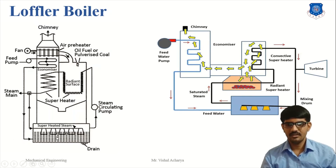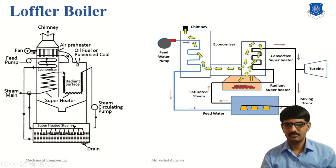In the evaporating drum, 2/3rd superheated steam passes through the nozzle and mixes with the feed water, converting it into saturated steam. The steam circulating pump then transfers the saturated steam to the radiant superheater. In the radiant superheater, heat transfers from the combustion of fuel by radiation and converts the steam into superheated steam. The convective superheater then converts the steam into superheated steam at 500 degrees Celsius and transfers it to the turbine, while 2/3rd steam is returned to the evaporating drum.